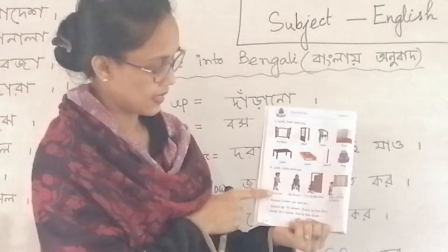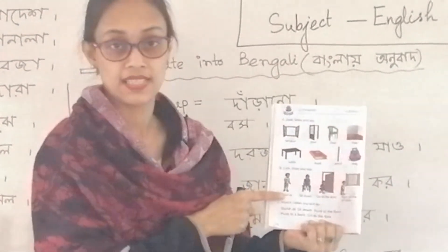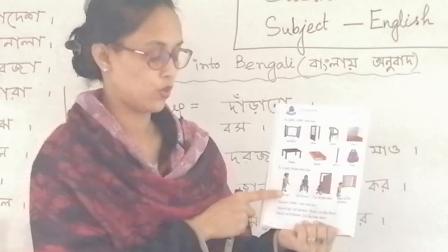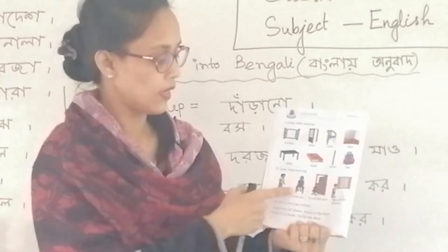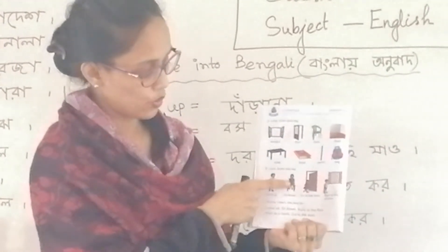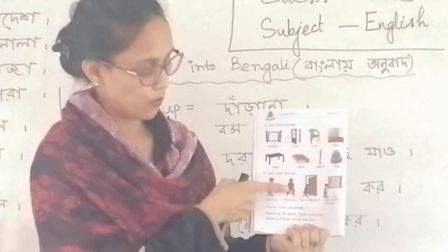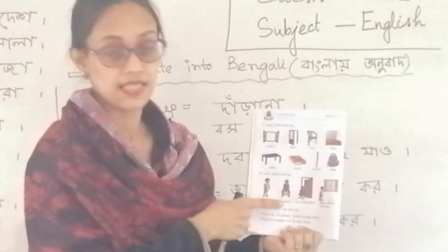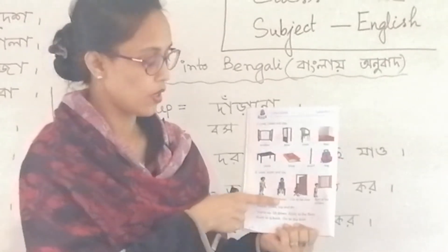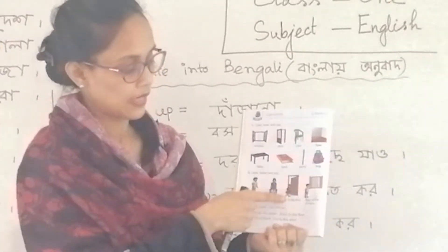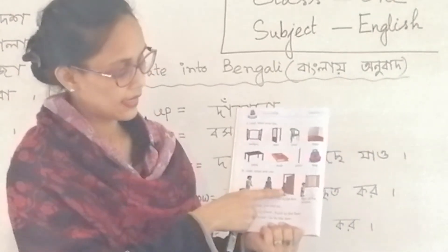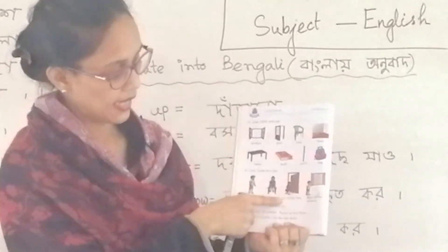এখান দেখো ছে দাড়িয়ে আছে, লেখা আছে। বাচে বসে আছে, একটা মেয়ে চেয়ারের পর বসে আছে। লেখা আছে, লেখা আছে। বসু। তারপো দাখো, আপর্য আমে সেকে লেখা আছে।